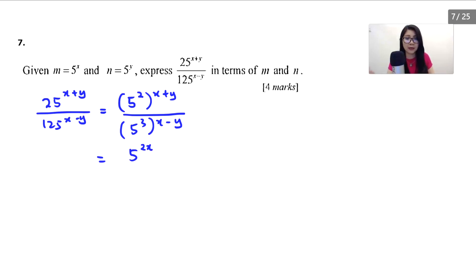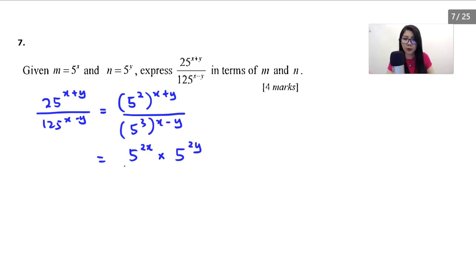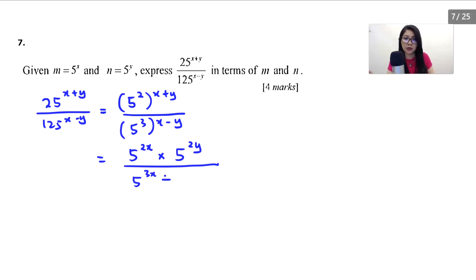Plus means the powers add, so it's times: 5 to the power of 2x times 5 to the power of 2y. For the bottom: this is 5 to the power of 3x, and if it's minus it means divide, so divided by 5 to the power of 3y. Now we look back at the question: m equals 5^x and n equals 5^y.